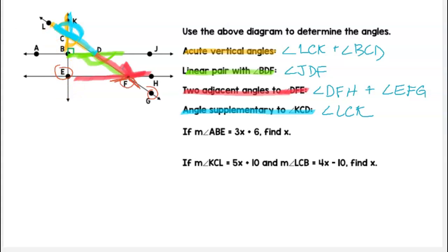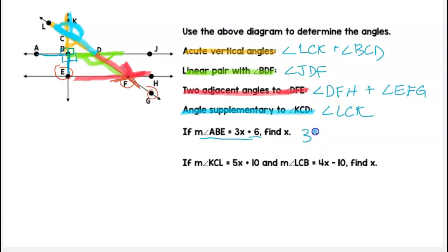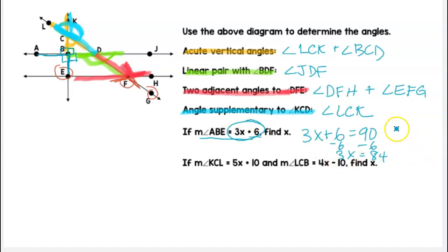Now we're going to try some algebra. We are told the measure of angle ABE is 3x + 6. Angle ABE is the vertical angle to the right angle over here, so these two angles have equal measure, meaning ABE is also 90 degrees. In fact, all four angles around this intersection are 90 degrees. So I know ABE equals 90, and I take 3x + 6 = 90, giving me 3x = 84.